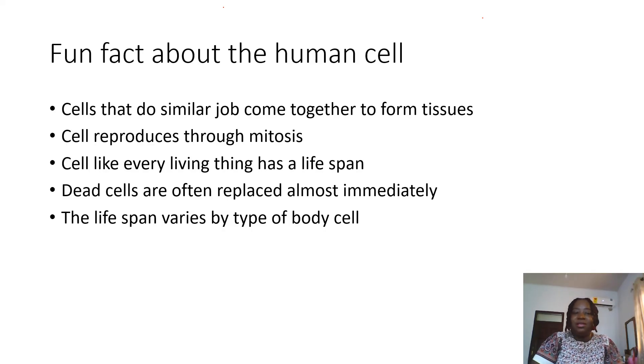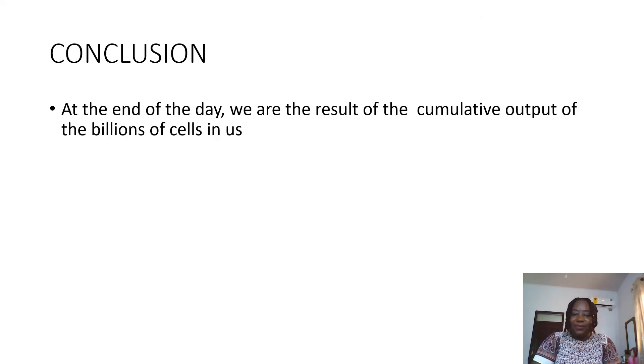Now let's talk about fun facts about the human cells. Cells that do the same job come together to form tissue. We said that's the basic unit of life, but eventually they come together to form tissue and so they are able to locate themselves and then come together. And then we have reproduction. The cell reproduces through a process called mitosis, which will be a topic for another day if you guys want me to address it. And then like every other living thing, the cell has a lifespan. So various cells have different lifespans. Some have 13 days, some have 120 days, some have 18 months, etc. But when they die, they are replaced almost immediately in a very healthy human being. So there is no deficit. It's always like a cycle. This dies, this is replaced. This dies, this is replaced. That's how God has been so wonderful.